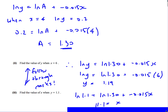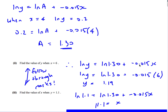Next it says find y when x is 6. It's important to note you can get follow-through marks here even if the previous part was wrong, as long as you use your equation consistently. Using a = 1.30 and ln b = −0.015, substitute x = 6 into the equation to get ln y, then y = e to that value, giving y = 1.19. When y is 1.1: ln(1.1) equals ln(1.30) minus 0.015x, rearranging gives x = 11.1.